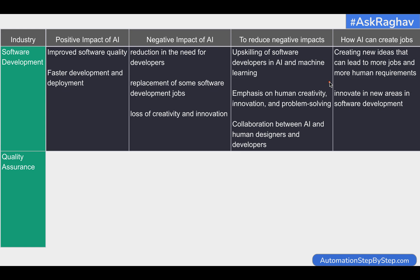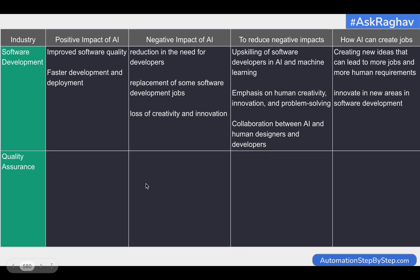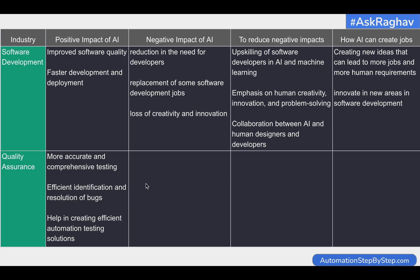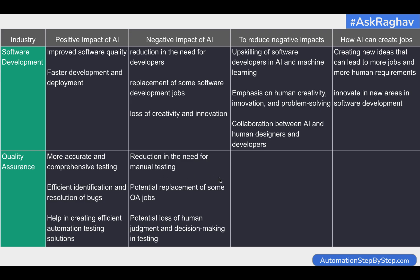Let's come to the QA and testing industry. When we talk about the positive impact, AI can make our work efficient, faster, and easier. It can give us many suggestions, help us in bug identification and resolution, and help in creating better automation testing platforms and frameworks.